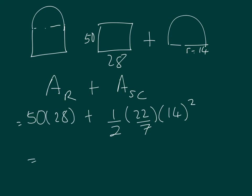When you use your calculator for the two parts, you get 1400 and 308. The final step is to add those two together, so you get 1708. Remember we're talking about area, so it is centimeters squared.